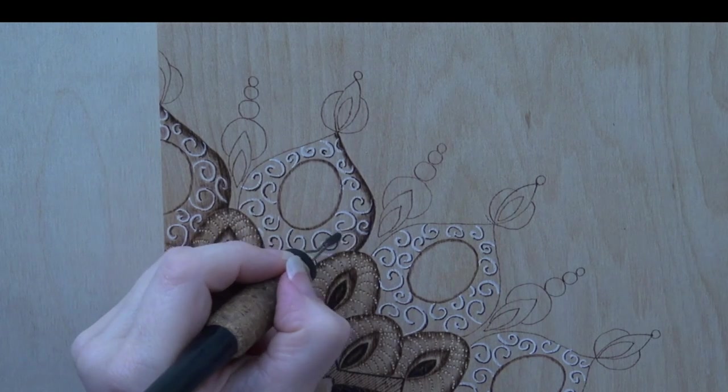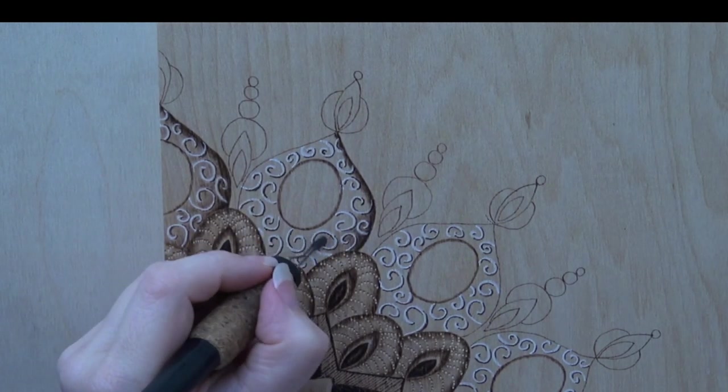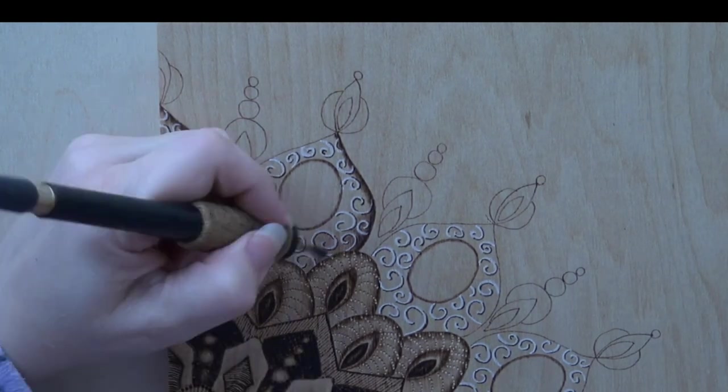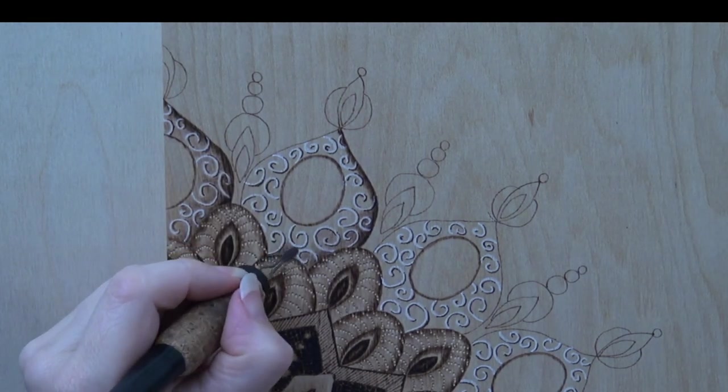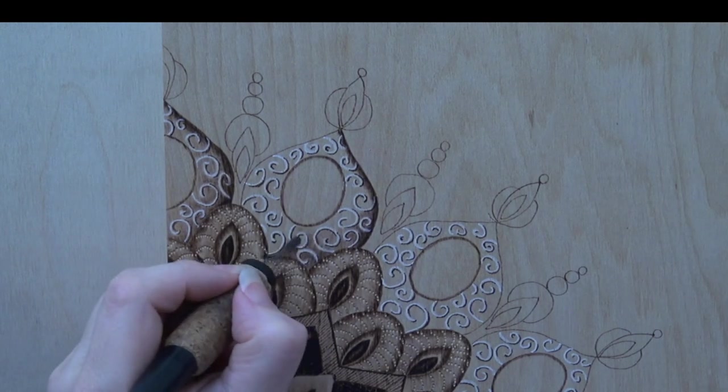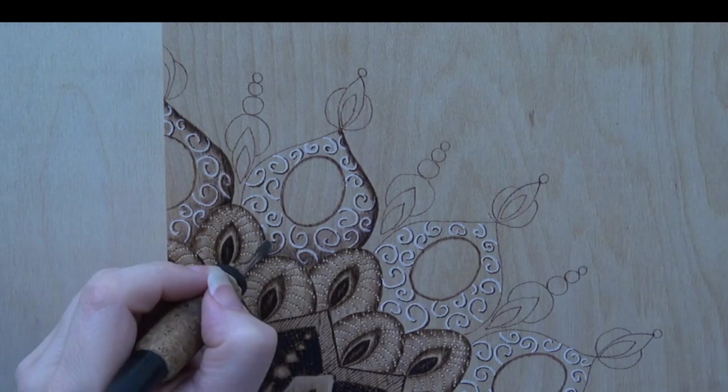Then burn over the rest of the pod until it is tan in color. But now try to avoid burning over the charcoal lines. The reason is that we want the lines to be as pale as possible for good contrast. Since the charcoal only resists the heat we have to avoid burning over these lines, otherwise the underlying wood will darken some.